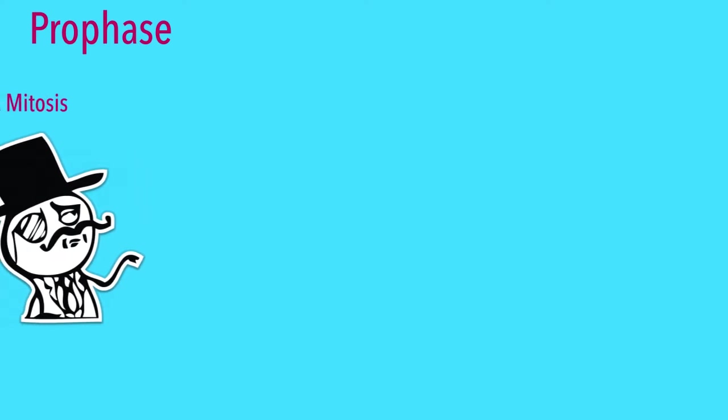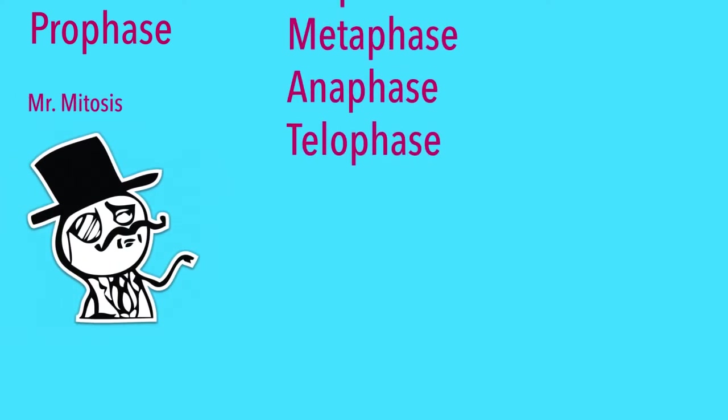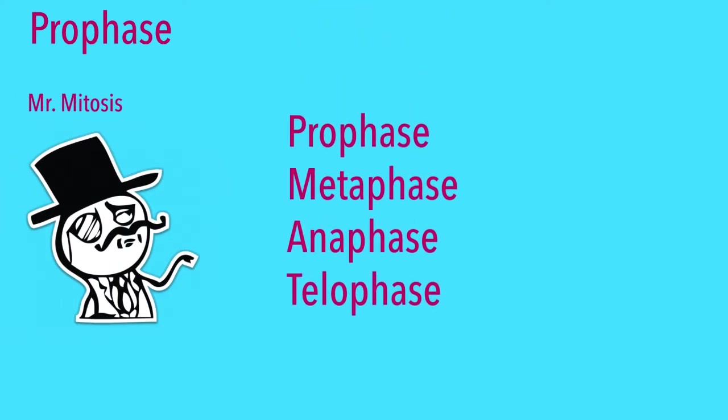At last, the prep work is done, and here you have it folks, Mr. Mitosis himself. In the mitotic phase, there are four other phases: prophase, metaphase, anaphase, and telophase. Let's take a deeper look at what each of these phases do.